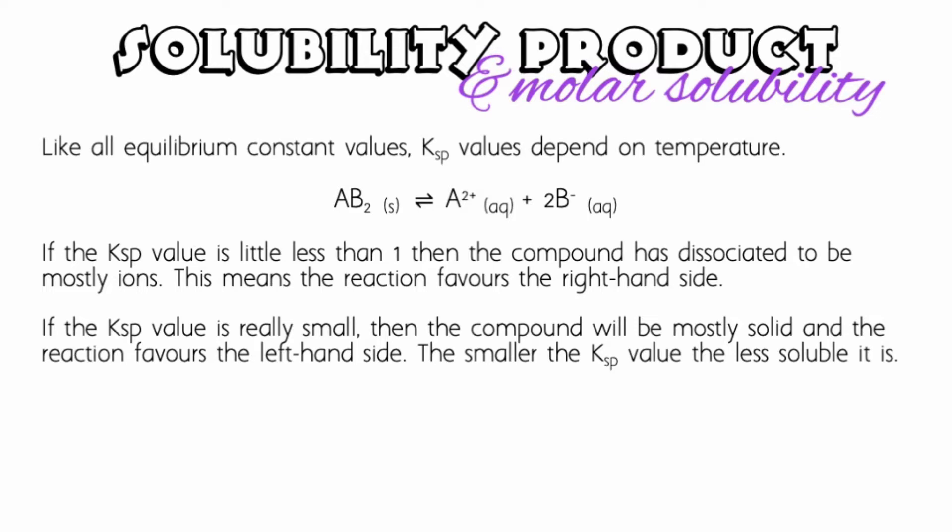If the Ksp value is really small, then the compound will be mostly still a solid, still in its ionic lattice, and the reaction favors the left-hand side. The smaller the Ksp value, the less soluble it is. This is all about how soluble something is. The more soluble, the more ions we're going to have in solution.